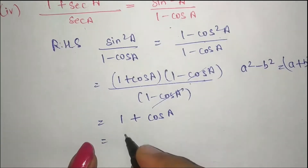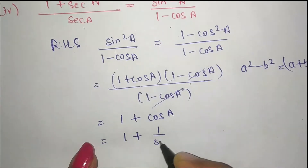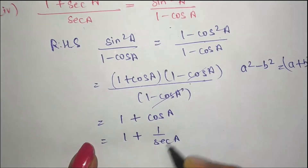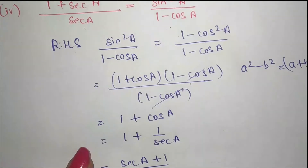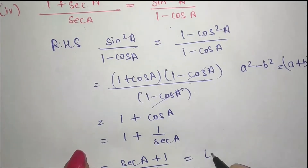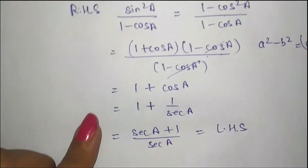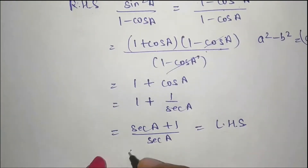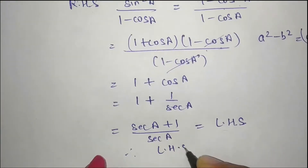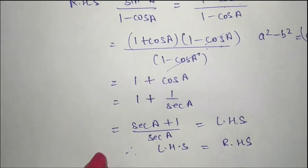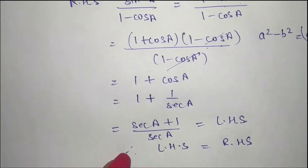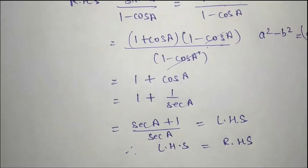Now 1 plus cos a — we can apply secant: this equals (sec a + 1) upon sec a. This is our left hand side. So left hand side is equal to right hand side. Now we move to the next part.